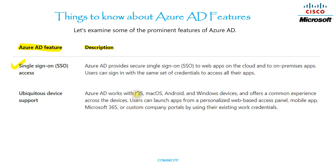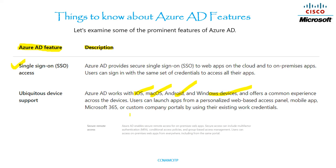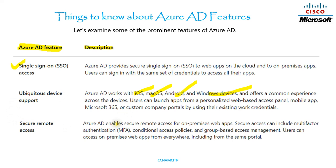Azure AD supports mobile and web apps across iOS, Android, and Windows devices, offering a common experience across devices. Users can launch apps from a personalized web-based access panel, Microsoft 365, or custom company portals using their existing work credentials. The next feature is Secure Remote Access: Azure AD enables secure remote access for on-premises web apps, including multi-factor authentication, conditional access policies, and group-based access management.